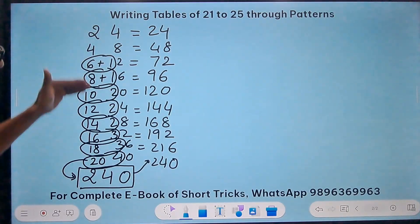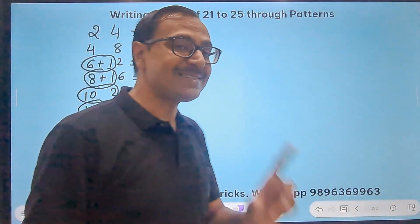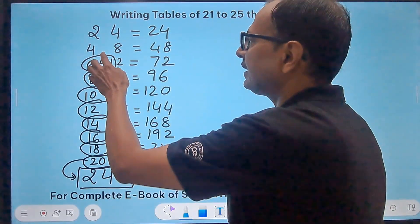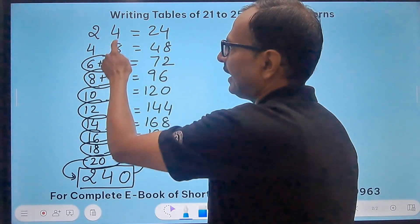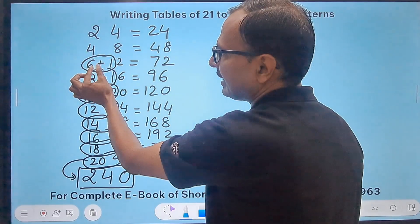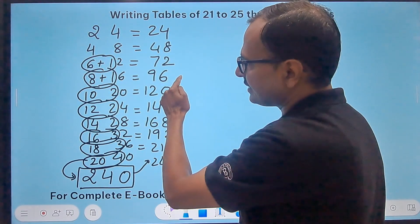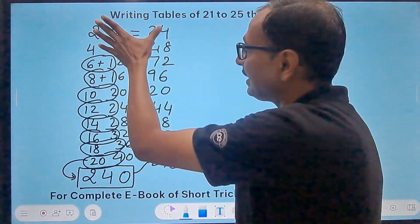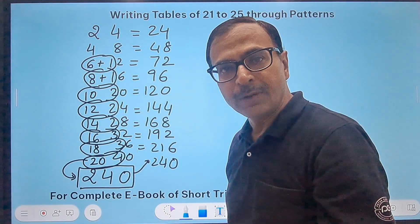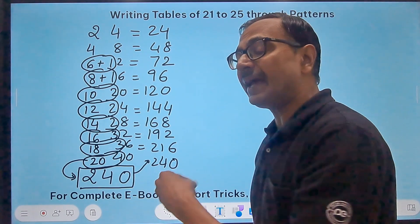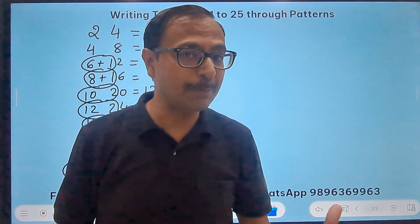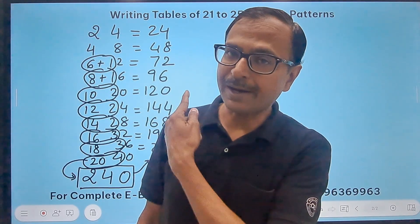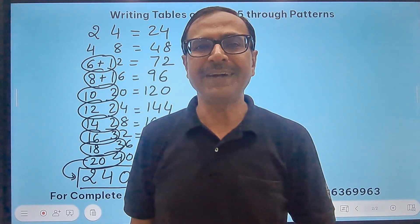This is actually a general rule for writing the tables of any two-digit number. If you write the table of the first digit and the second digit, add them together, and retain the unit digit in the answer, you can write the table of any two-digit number. This general rule can be applied to numbers like 67 or 83 as well.